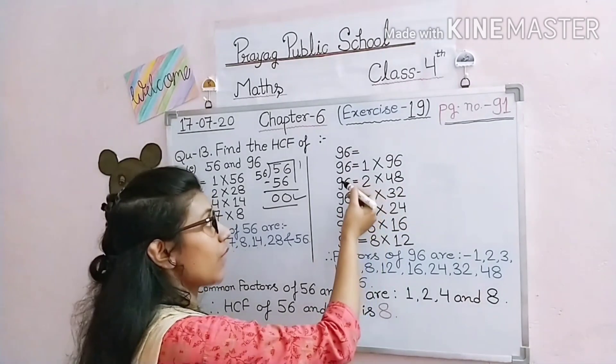Therefore, common factors of 56 and 96 are: 1, 2, 4, and 8. Among these common factors, 8 is the highest. Therefore, the HCF of 56 and 96 is 8. Once you write the highest common factor, your question is complete.